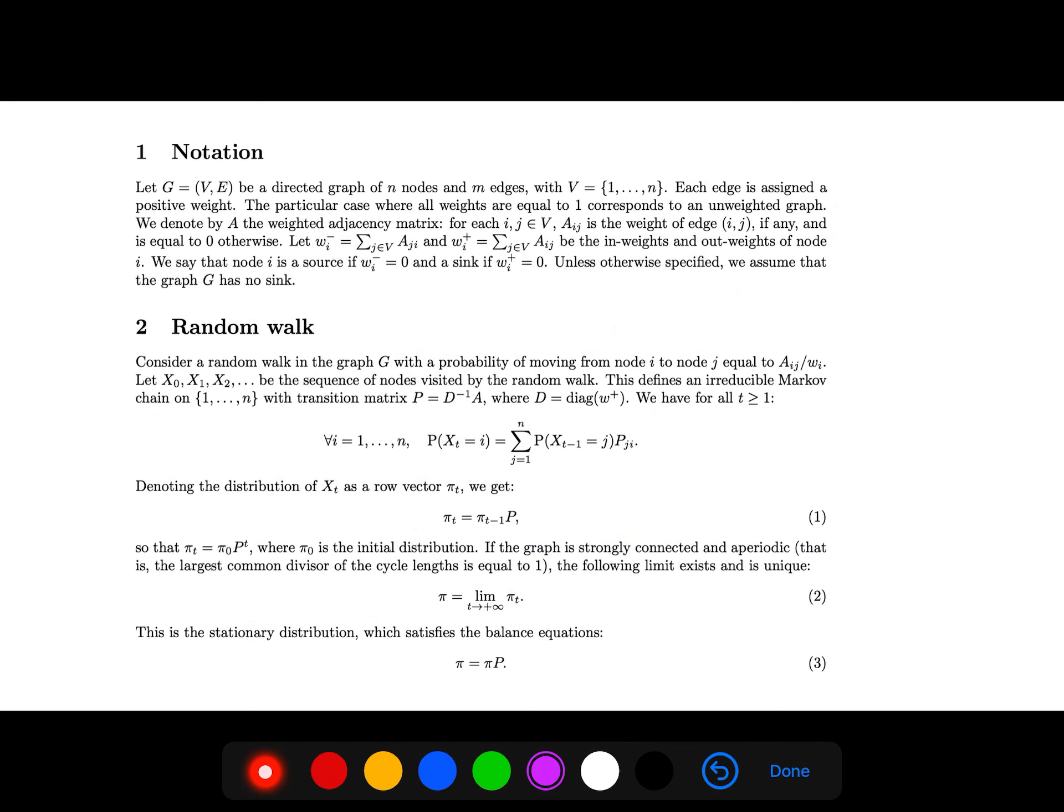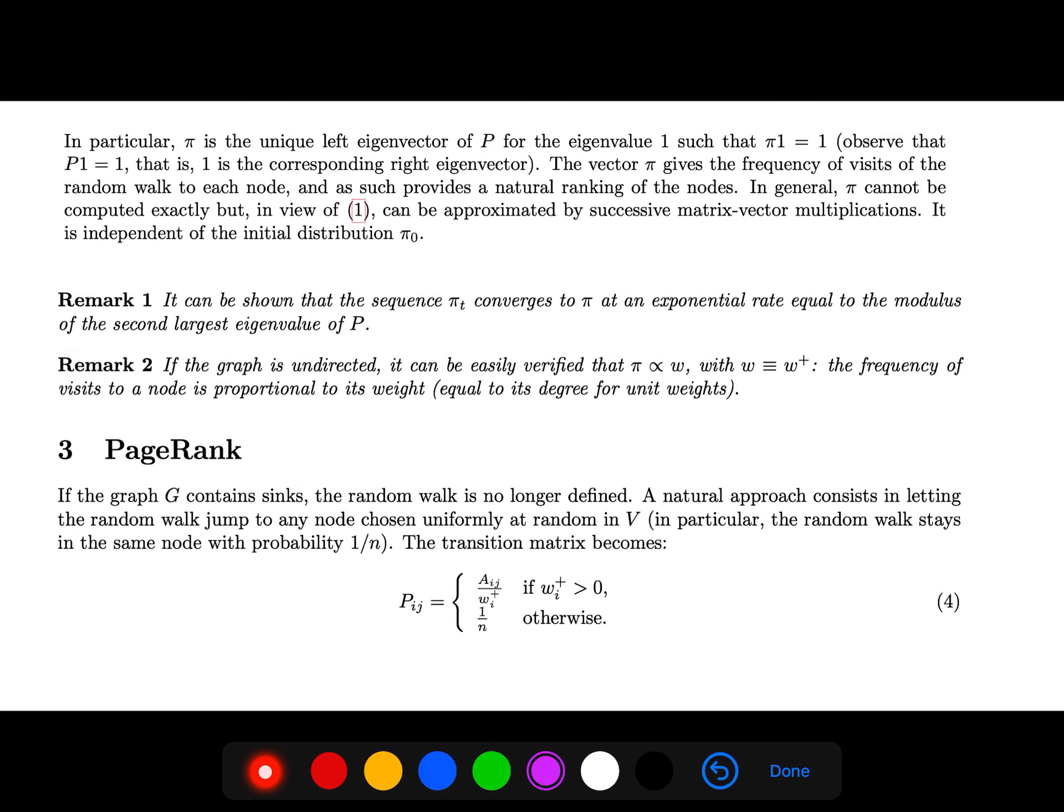The sum of all these probabilities is one. That's why we can have this recursive algorithm to understand the stationary distribution. Classically, we write this: at the limit, we have this important balance equation that is like the eigenvalue one of the transition, the left eigenvector of P.